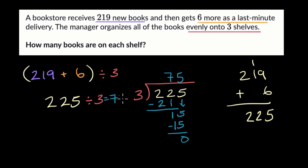So 225 divided by three is 75. We have exactly 75 books on each shelf and we're done.